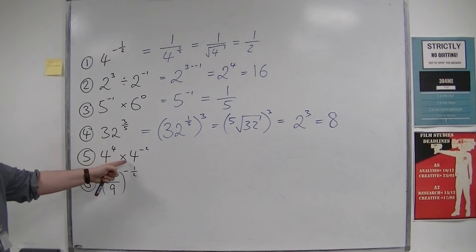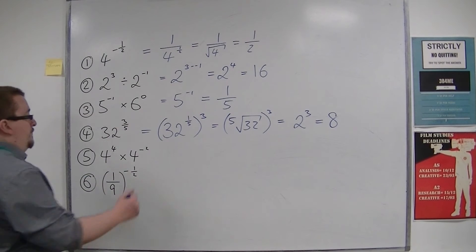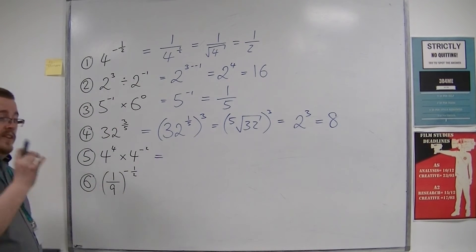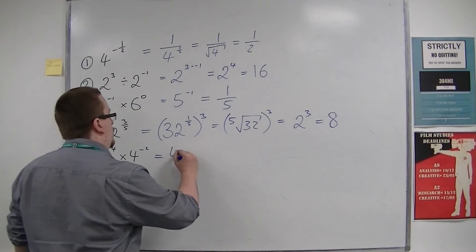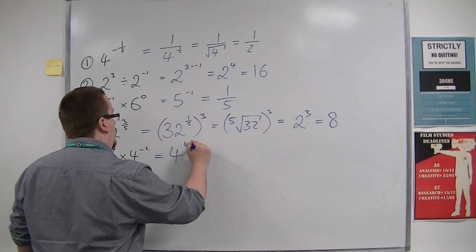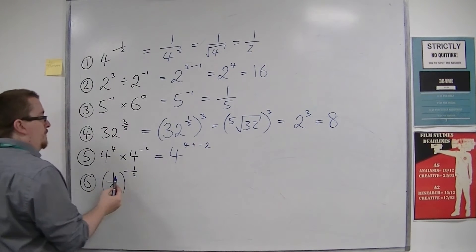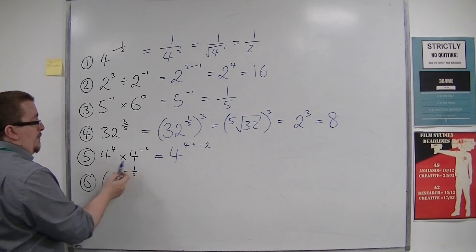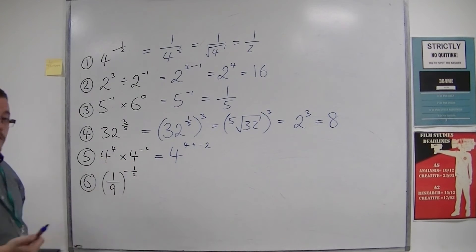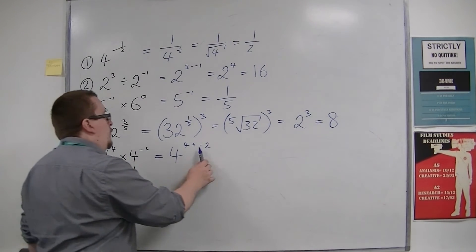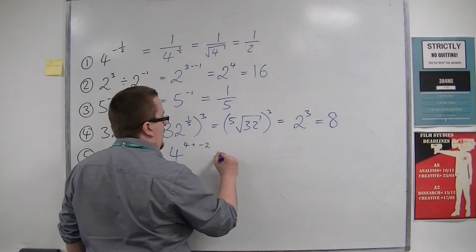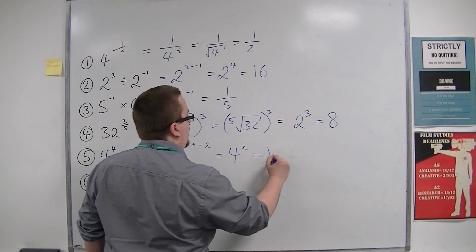Then we've got 4 to the power of 4 times 4 to the power of minus 2. So using the first law of indices that I showed you in the previous video, that's 4 to the power of 4 plus minus 2. Because we're multiplying and the base numbers are the same, we can add the indices. 4 plus minus 2 is 2, so that's 4 squared. So that's 16.